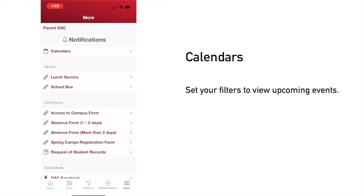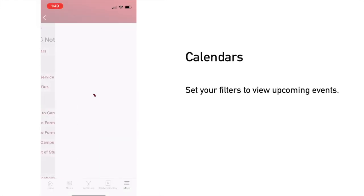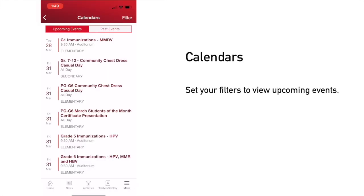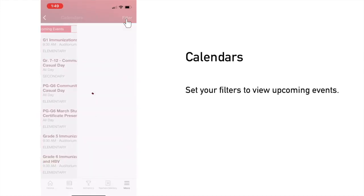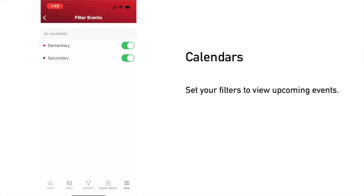Below notifications, there is a calendar icon. You can also set your filters here to view the calendar according to your child's division.